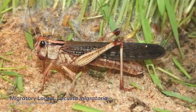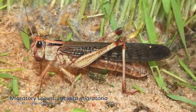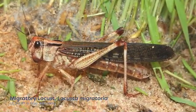A great example of a migratory grasshopper species is the suitably named migratory locust, Locusta migratoria.